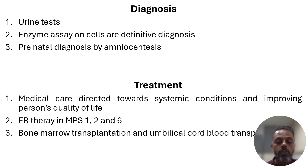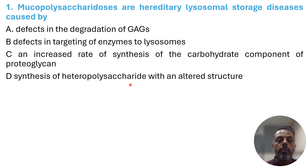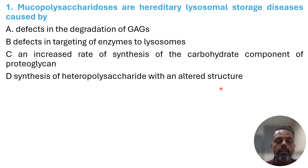First MCQ: Mucopolysaccharidoses are hereditary lysosomal storage diseases caused by: (A) defects in the degradation of glycosaminoglycans, (B) defects in the targeting of enzymes to lysosomes, (C) increased rate of synthesis of the carbohydrate component of proteoglycans, or (D) synthesis of heteropolysaccharide with an altered structure. Mucopolysaccharidoses are associated with defective degradation of glycosaminoglycans due to enzyme deficiency. The correct answer is A.